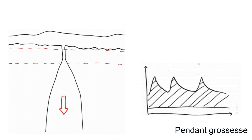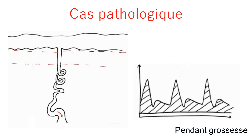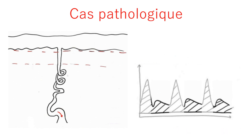Chez Claire, le Doppler est différent. L'artère a perdu son caractère musculaire et devient dilatable. Il y a alors disparition de l'incisure protodiastolique, et la diastole est augmentée car, grâce au remodelage vasculaire, plus de sang passe. En cas de pathologie, le Doppler n'est pas modifié comparé à une situation hors grossesse : le notch persiste et la diastole n'est pas augmentée. On a donc une mauvaise perfusion du placenta.